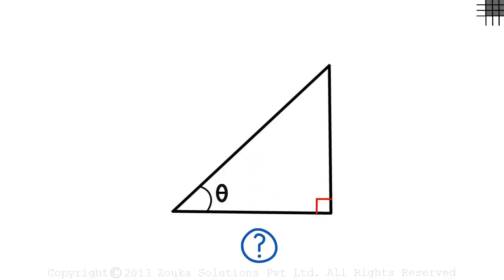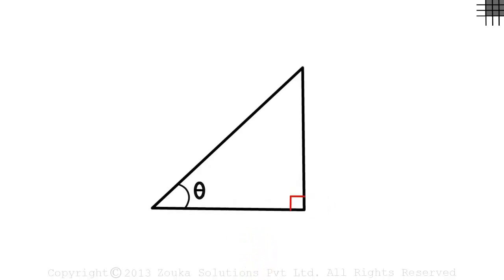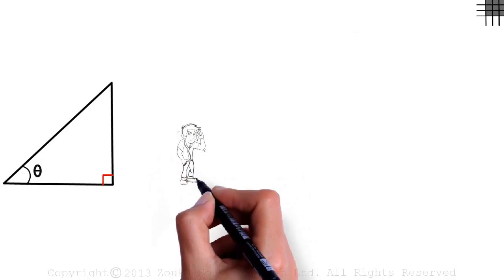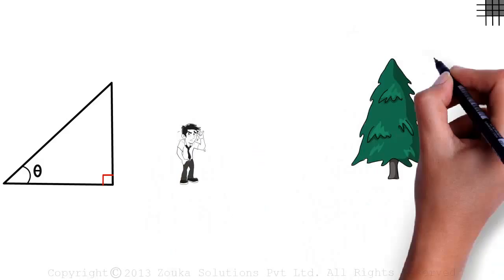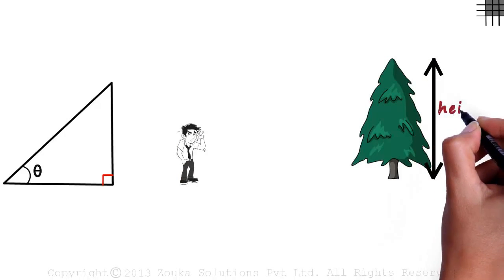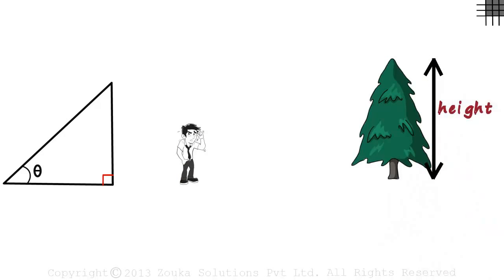But how do these kinds of triangles help us in real life? How does trigonometry help us in real life? Let's say Zen wants to find the height of this tree. He has to measure this length, which is the height. One way is to make an approximate guess, but a better way to find the height is by using trigonometry.